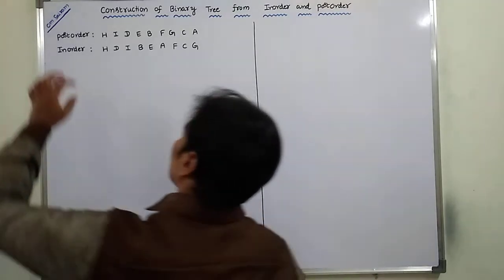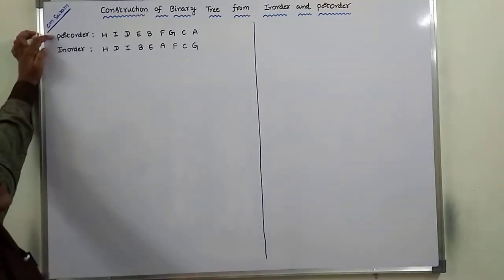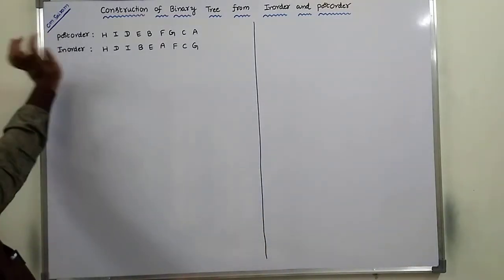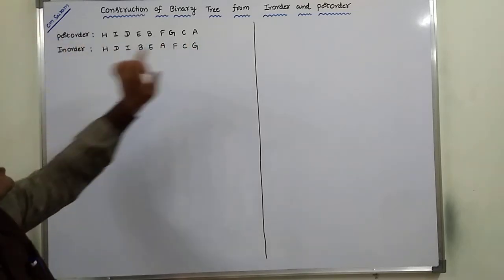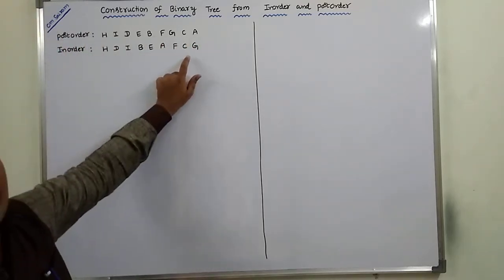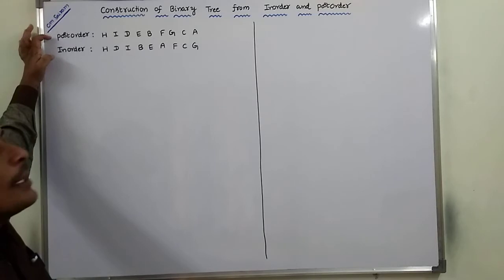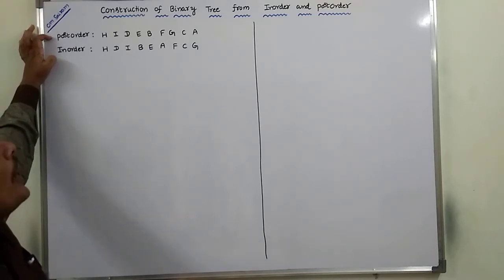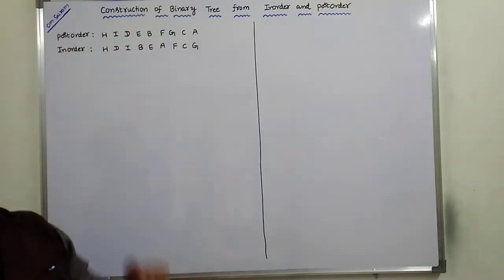Here are two given traversal techniques: the post-order sequence and the in-order sequence. By using these two sequences, we have to construct the binary tree.